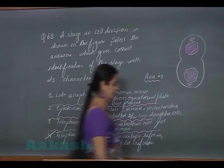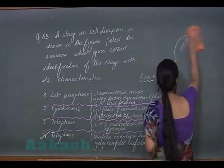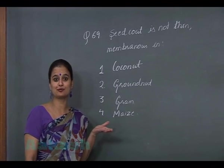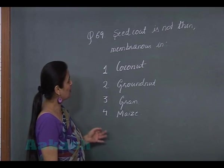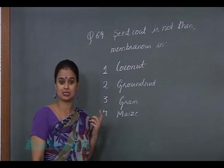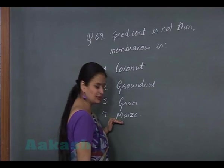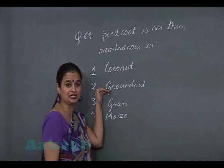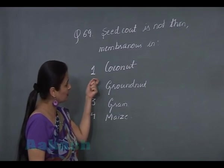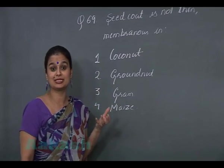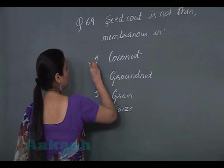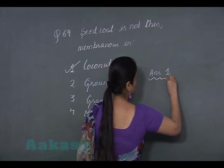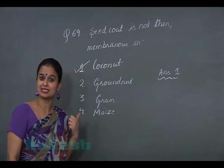Let's discuss question number 69. We have to find which organism does not possess a thin and membranous seed coat. In mace and groundnut, a membranous seed coat is present. In the case of coconut, the seed coat is thick. So the correct answer for question 69 is option 1 — coconut.